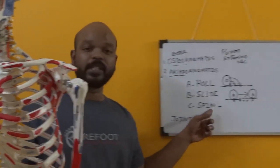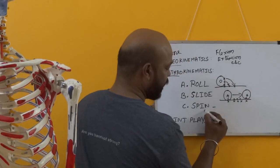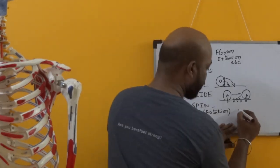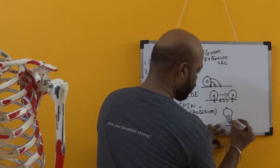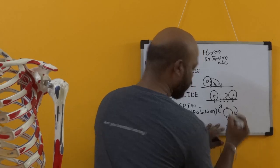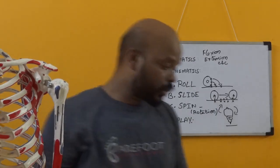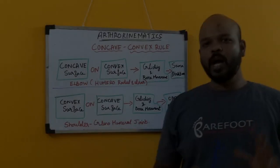Next is the spinning movement of the joint surface, which is basically a rotational movement. Like a spinning top rotating on a fixed surface around its own axis, in the human body when you do abduction and then lateral or medial rotation, what you have is spinning of the humeral head on the fixed glenoid cavity.